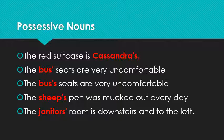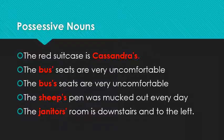You can form the possessive case of a plural noun that ends in S by adding an apostrophe alone. For example: 'The janitors' room is downstairs and to the left.' The word 'janitors' is plural with S at the end, so you add only an apostrophe after it without adding another S. However, if you want to add S after the apostrophe, that is also acceptable — but the form without the extra S is more commonly used.